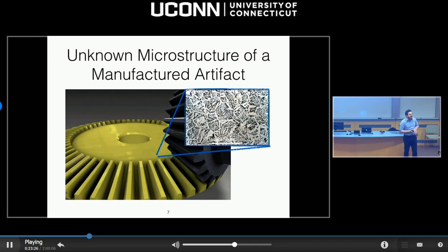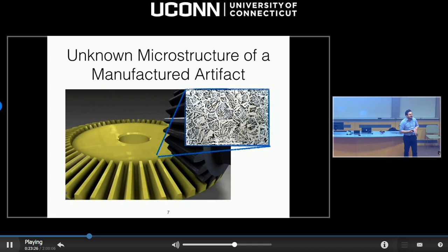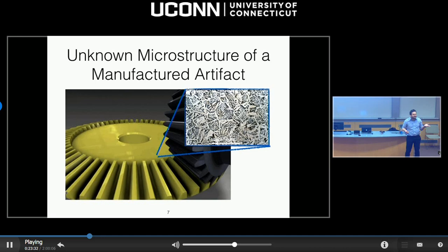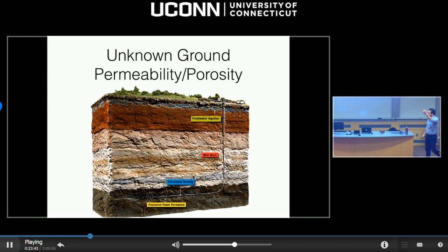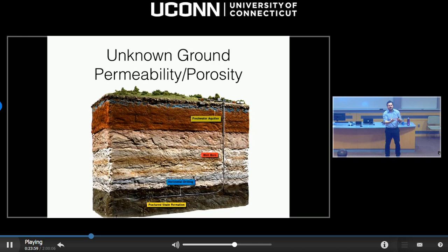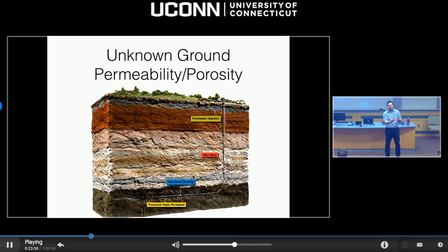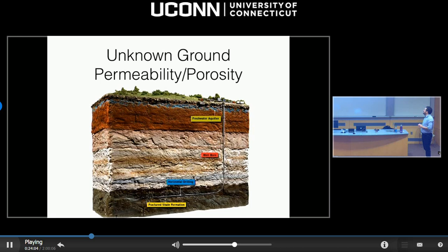So is this uncertainty aleatoric or epistemic? It is epistemic — it is reducible with an electron scanning microscope, but it's ridiculous to do so. Similarly, the permeability of the ground is not random; it is very specific, but to measure it you have to drill and take out pieces, pass fluids through them to measure permeability, or use seismic inversion. This too is an example of epistemic uncertainty.